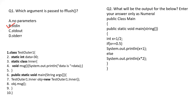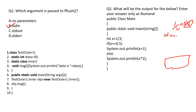Next question: what will be the output for the below code? Enter your answer only as a number — there will be no options available, unlike MCQs. Here, x equals 1/2. Since x is an integer, the decimal is eliminated, so only zero is stored in x. The condition x == 0.5 is false, so we go to the else, printing x * 2, which is 0 * 2 = 0. Hence 0 is your answer.